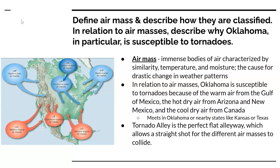The second question is: define air mass and describe how they are classified. In relation to air masses, describe why Oklahoma in particular is susceptible to tornadoes. An air mass is an immense body of air characterized by similarity in temperature and moisture, and it is the cause for drastic changes in weather patterns.